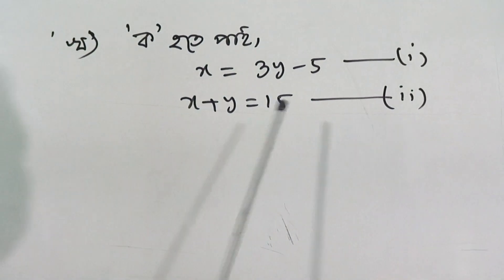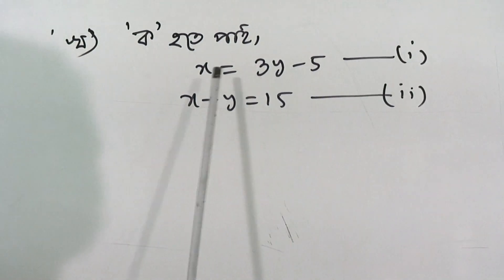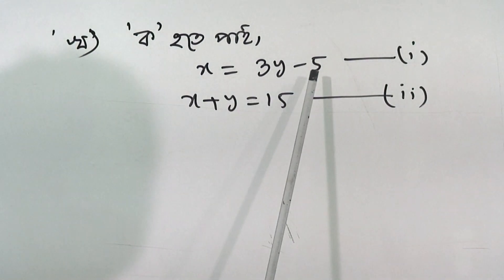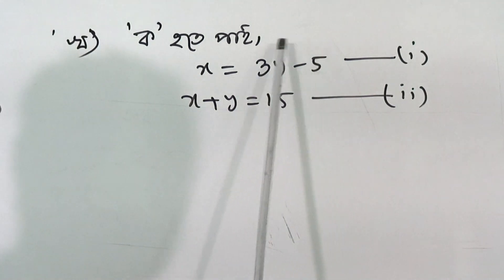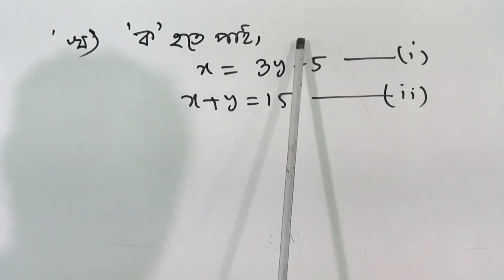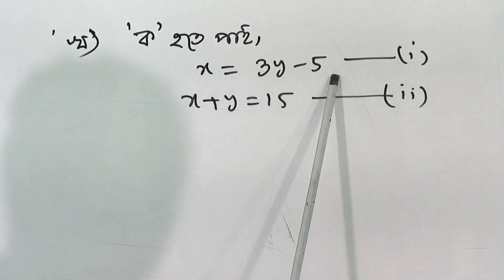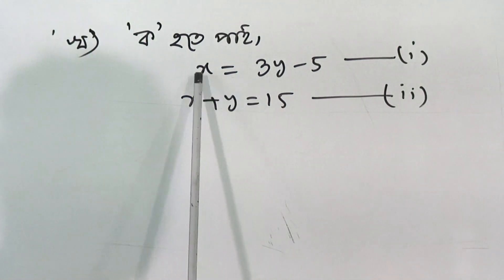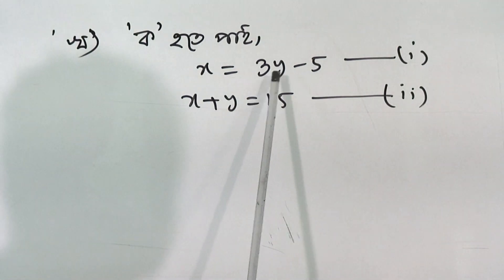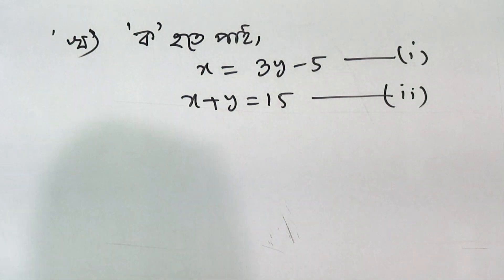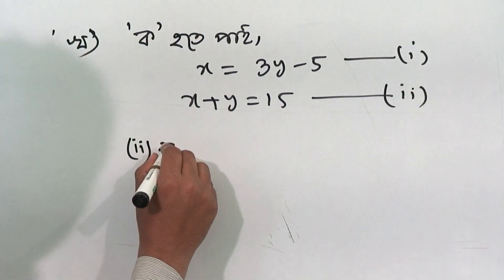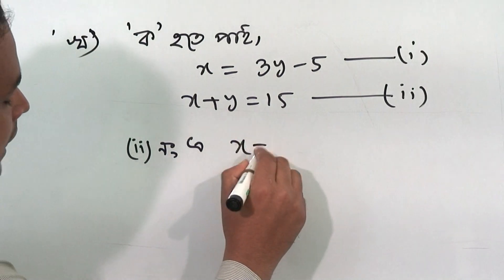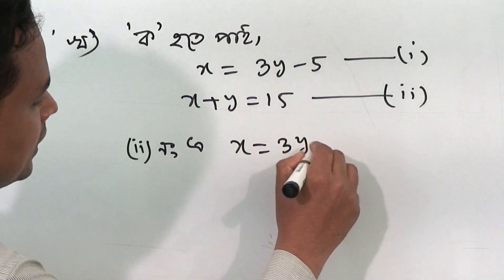Now we will look at x equals 3y minus 5. Substituting into the second equation: y is substituted, so we get 2y equals 3y minus 5. Let us look again at x equals 3y minus 5 and work through this substitution.